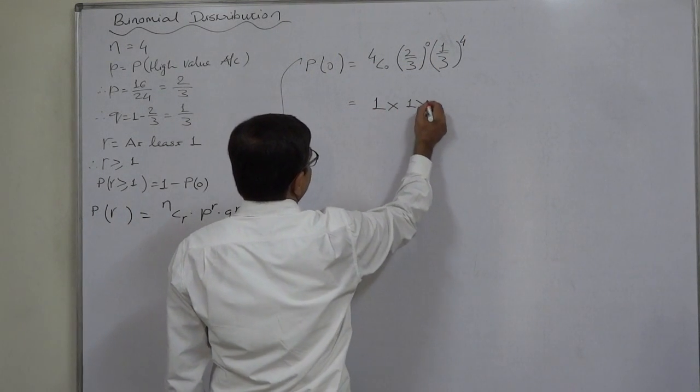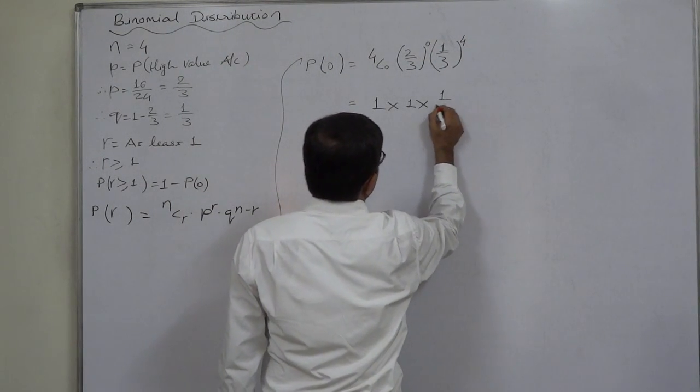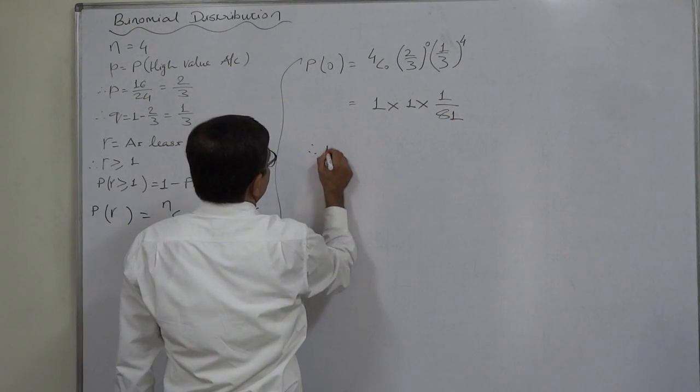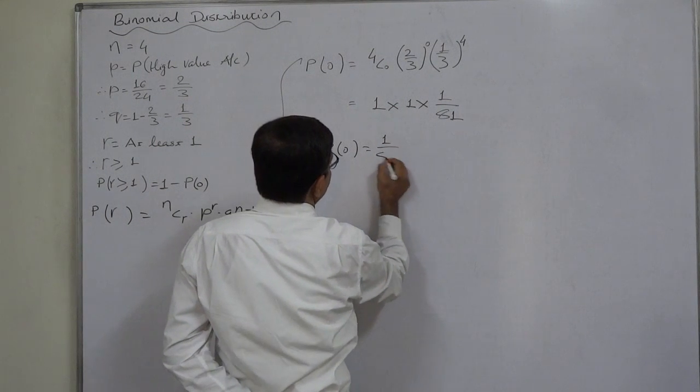2/3 raise to 0 is 1 and 1/3 raise to 4 is 1 by 3, 9, 27 and 81. So probability of 0 accounts is 1/81.